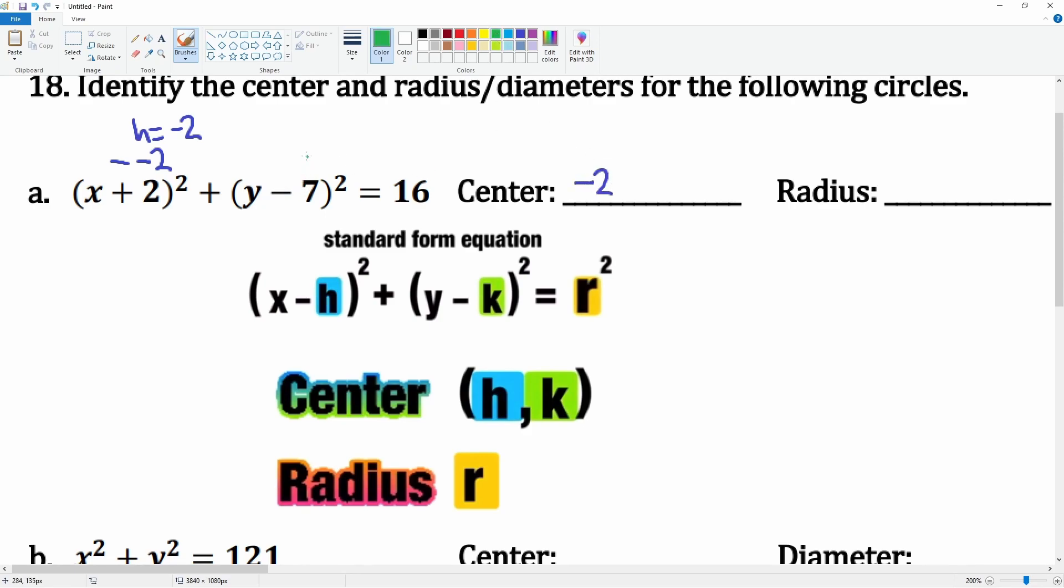That would be the radius. No, that would be the center, negative 2 comma 7. The radius is when you take the square root of 16, which is just 4. That would be its radius. There you go.